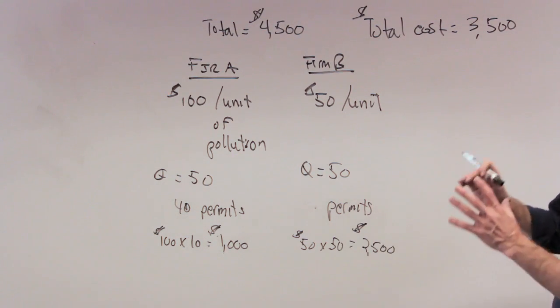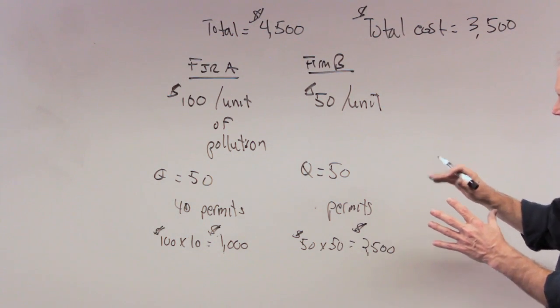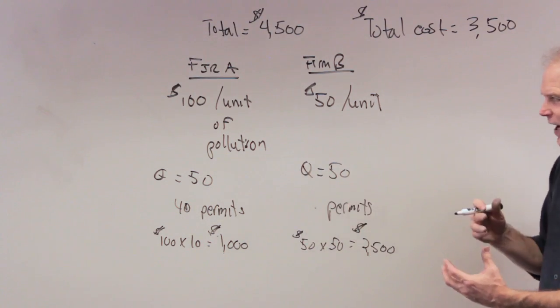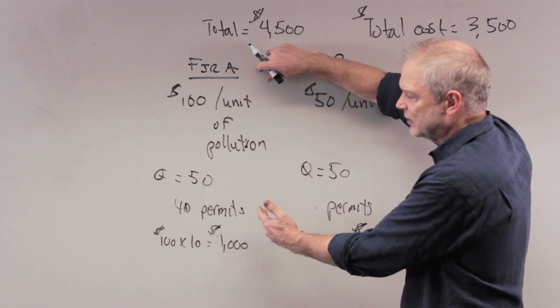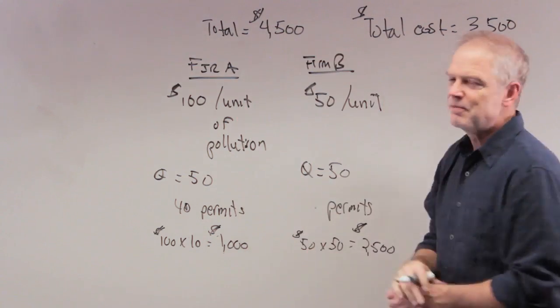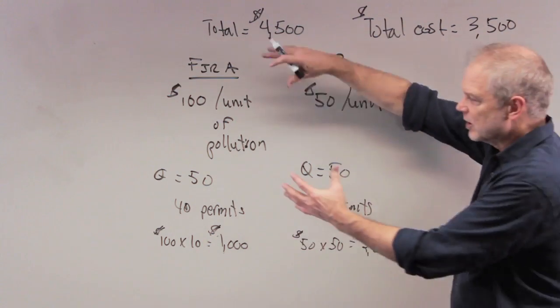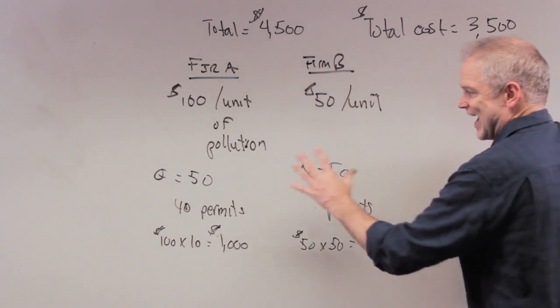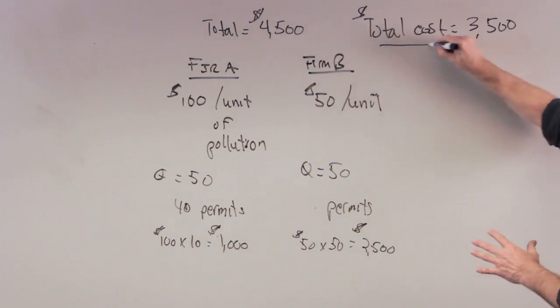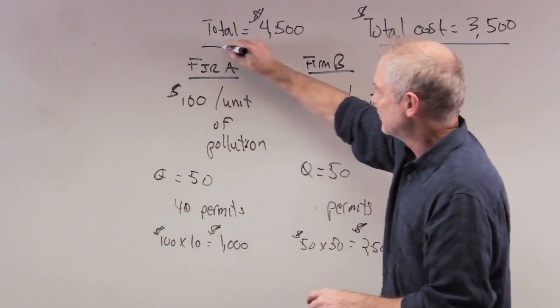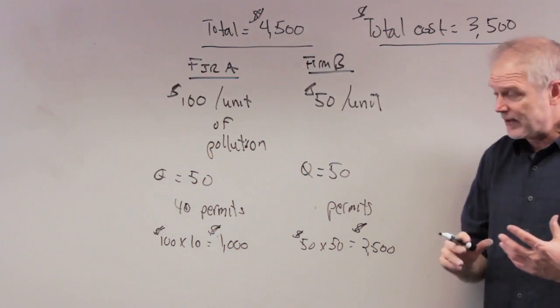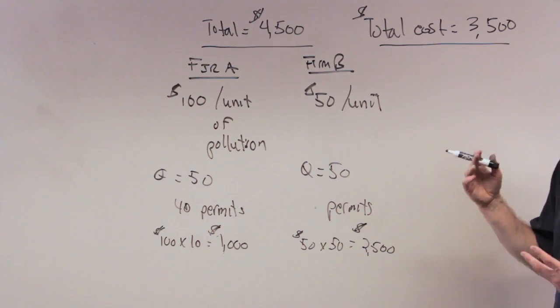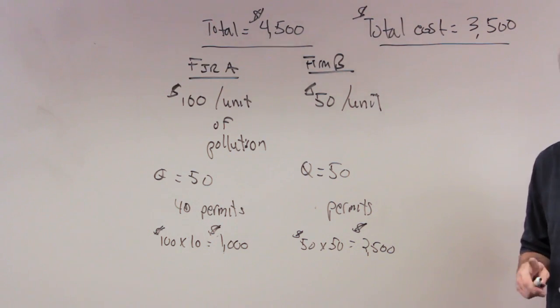In other words, if you don't allow firms to trade the permits, you're stuck with each firm reducing by the same amount. By allowing firms to trade permits, the high-cost polluters will buy the permits, and the low-cost polluters will get rid of all their pollution. And that's going to be a less costly way to get rid of pollution, because that's really what government wants to do. They want to produce this result in the least costly way to society and to firms. And that's what we achieve with this kind of cap-and-trade.